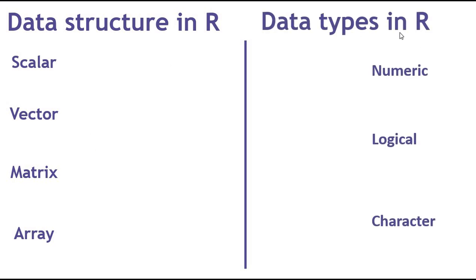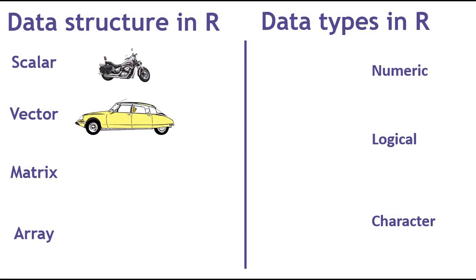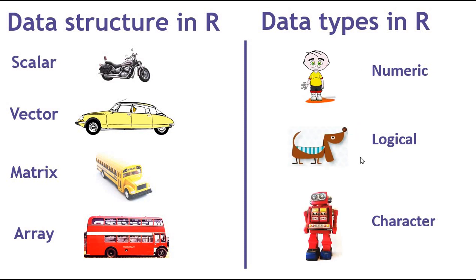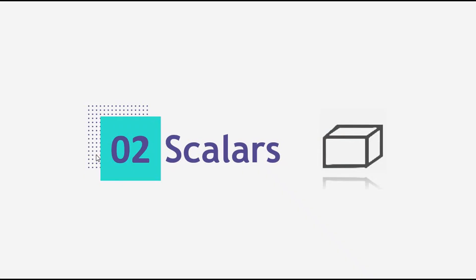I want to give you a real-life example so it will stick in your mind. You can imagine a scalar as a motorcycle, a vector as a car, a matrix as a bus, and an array as a double-decker bus. Numeric can be a boy, logical can be a dog, and character can be a robot. R places your boy into the bus alongside the dogs and robots. Since the double-decker bus has seat numbers, you can call any data you want — the idea is organizing data so you can retrieve it later.